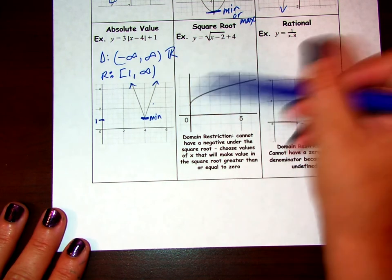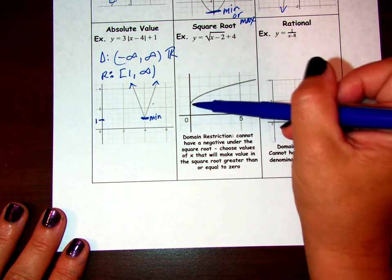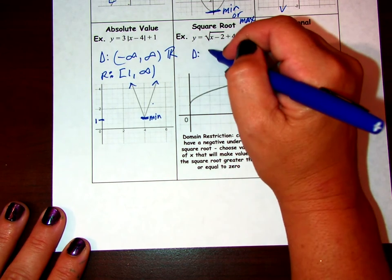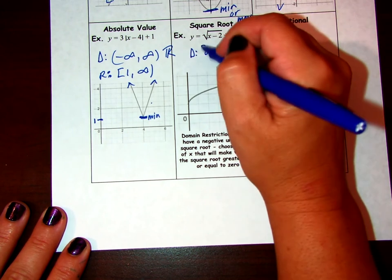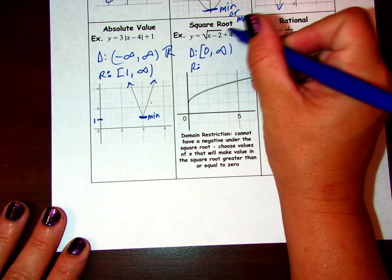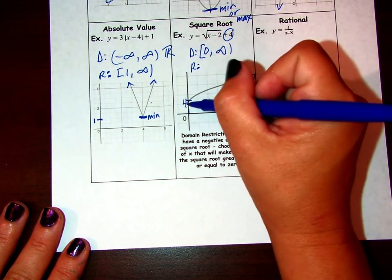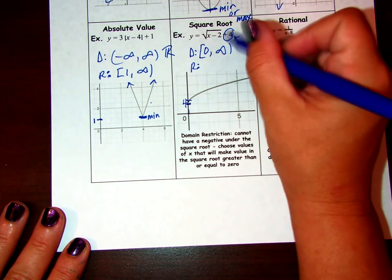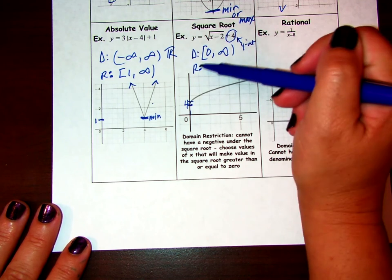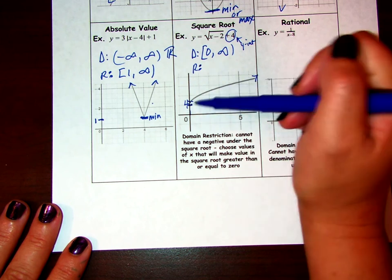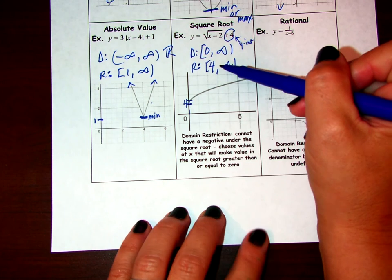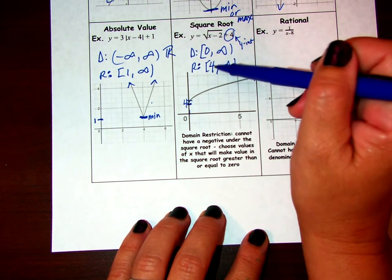For the square root function, it always goes forever to the right but is bounded by a stopping point on the left. In this case the domain goes from 0 to infinity, including that zero. For the range, looking at the equation, it has been shifted up by 4 — that constant at the end is like the y-intercept and tells us the minimum of the range. So this range goes from 4 to infinity, including the 4. We can also say all real numbers greater than or equal to 4.